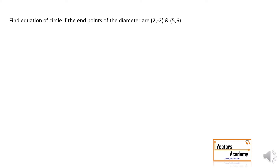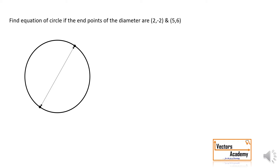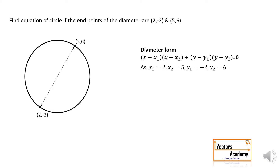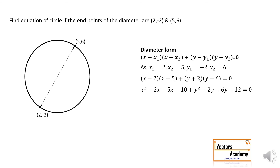Now in this question we need to find the equation of a circle whose endpoints of the diameter are known, that is (2, -2) and (5, 6). Since the endpoints of the diameter are known, we use the diameter form: (x - x₁)(x - x₂) + (y - y₁)(y - y₂) = 0. Taking one point as (x₁, y₁) and the other as (x₂, y₂) and substituting, we get x² + y² - 7x - 4y - 2 = 0.